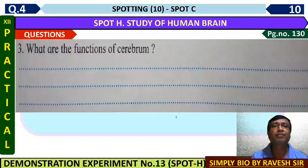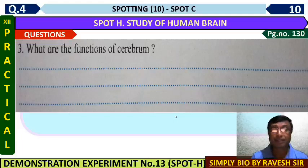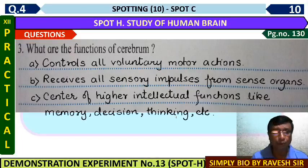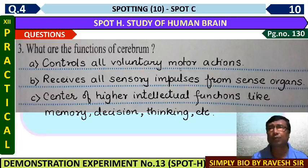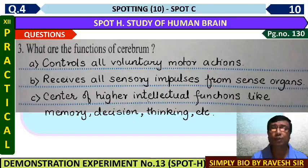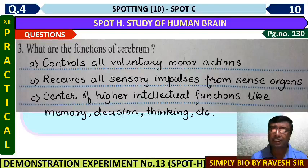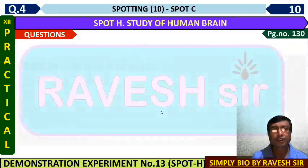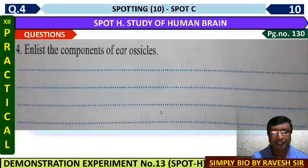The next question: what is the function of the cerebrum? We have already seen the cerebrum's functions in the comment section. In short: it controls all voluntary motor actions, receives all sensory impulses - it performs motor functions, sensory functions, and association functions also known as intellectual functions - which include memory, decision-making, thinking, and logic. All of this is the work of the cerebrum.